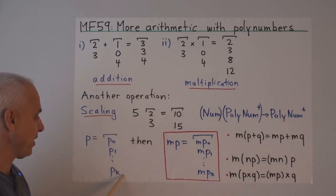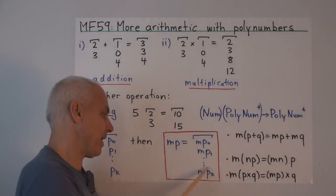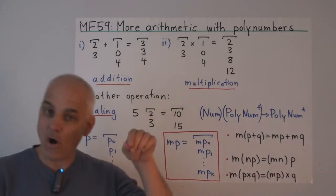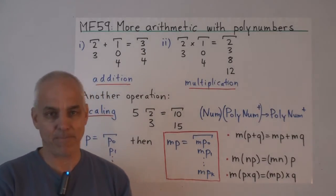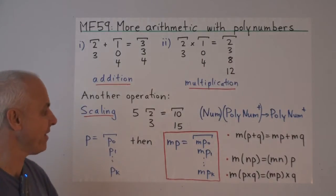And the rule is simply that you take a polynumber, you multiply by m, a number, and you get the new polynumber, all whose entries are multiplied by m. So we are scaling the polynumber.